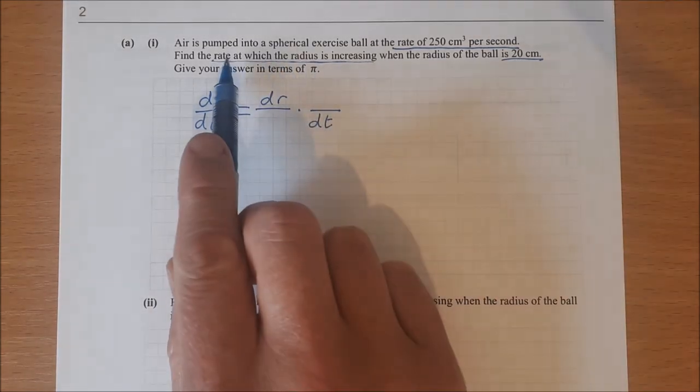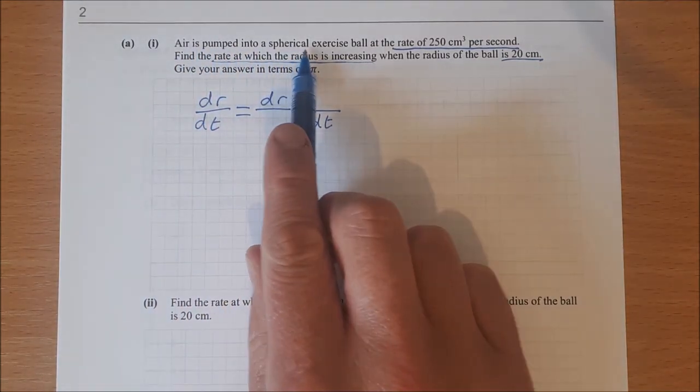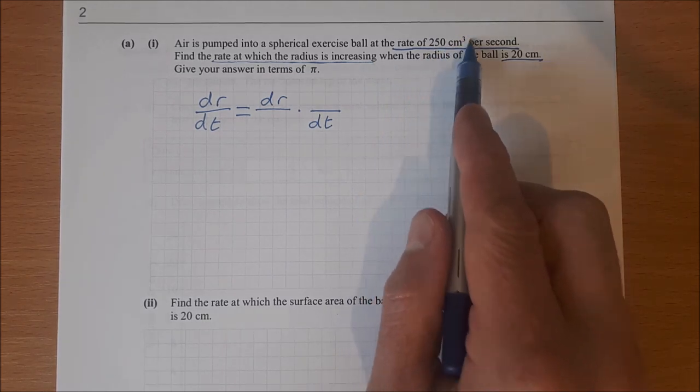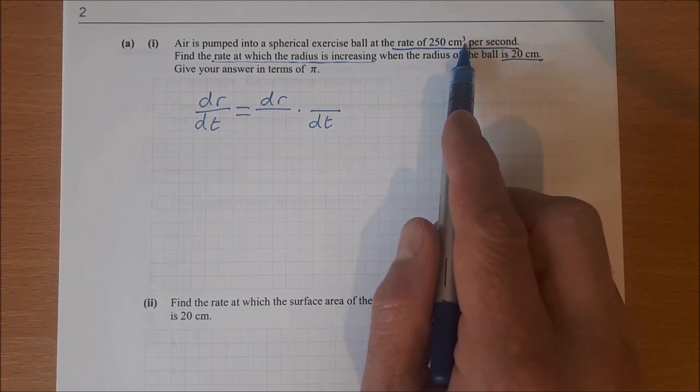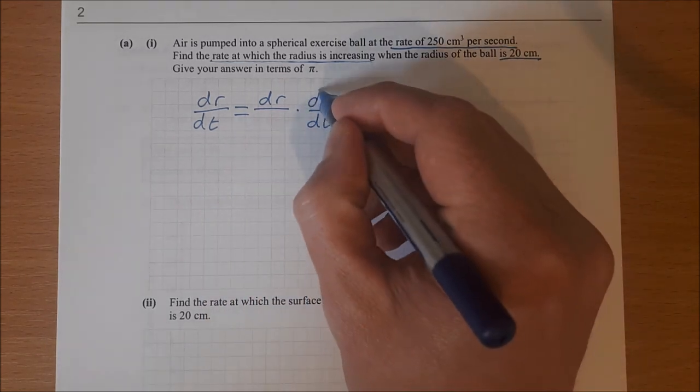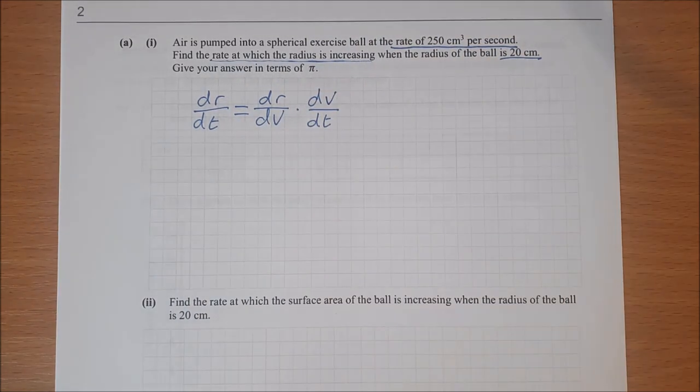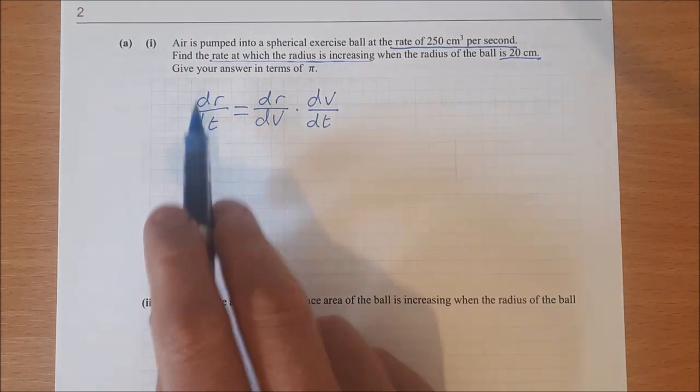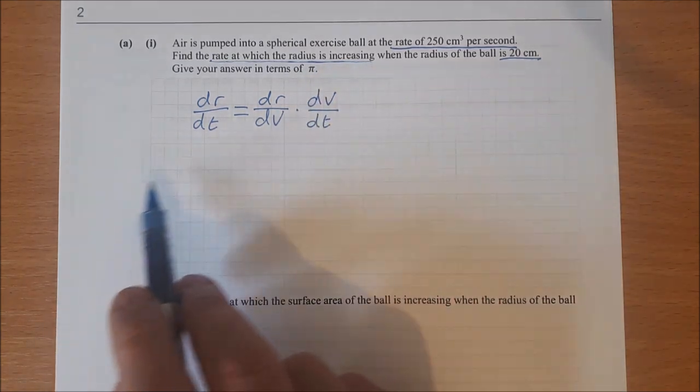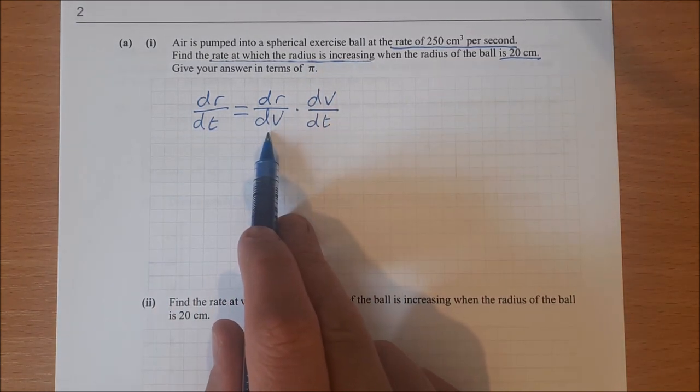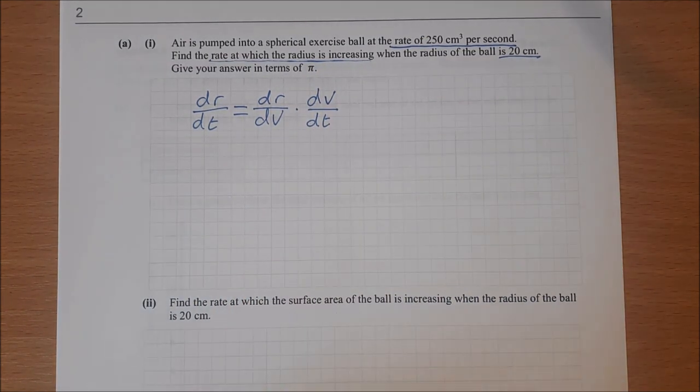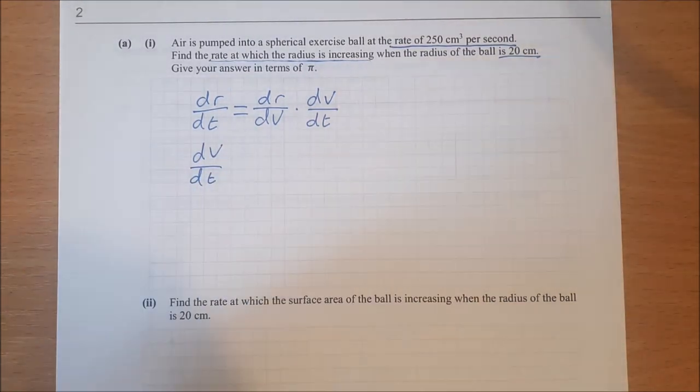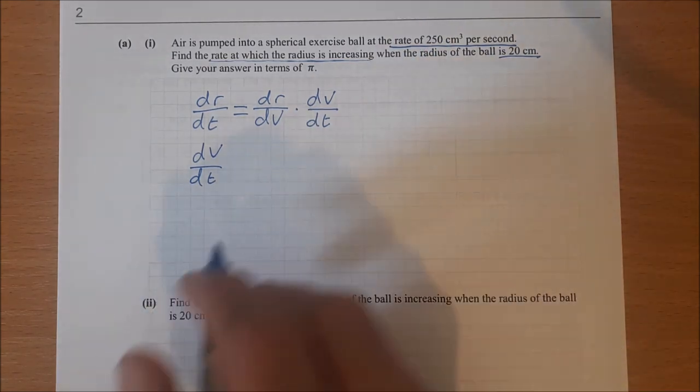And the answer is volume. So air is pumped into a spherical exercise ball at a rate of 250 cubic centimeters, that's volume, which is dv. So dv goes in here and here. In order to find dr/dt, which is the rate at which the radius is increasing, I need to find dr/dv and dv/dt. Now luckily for me, dv/dt I already have. dv/dt is 250.